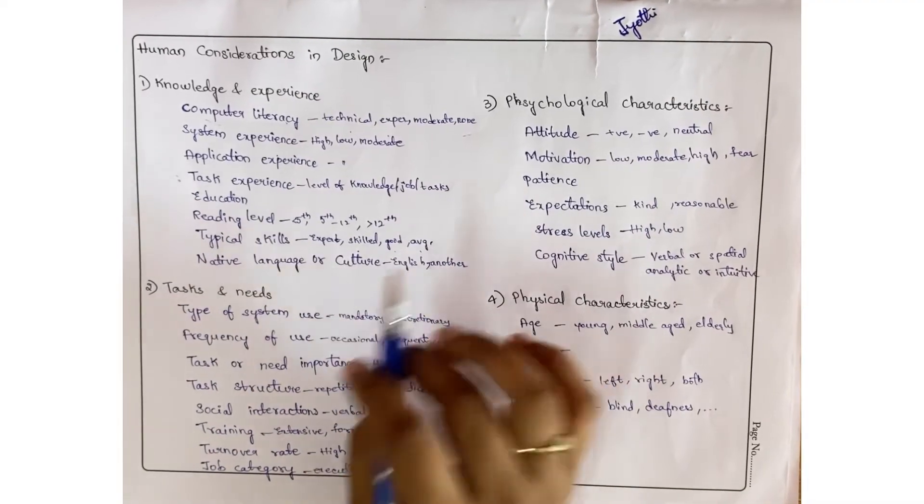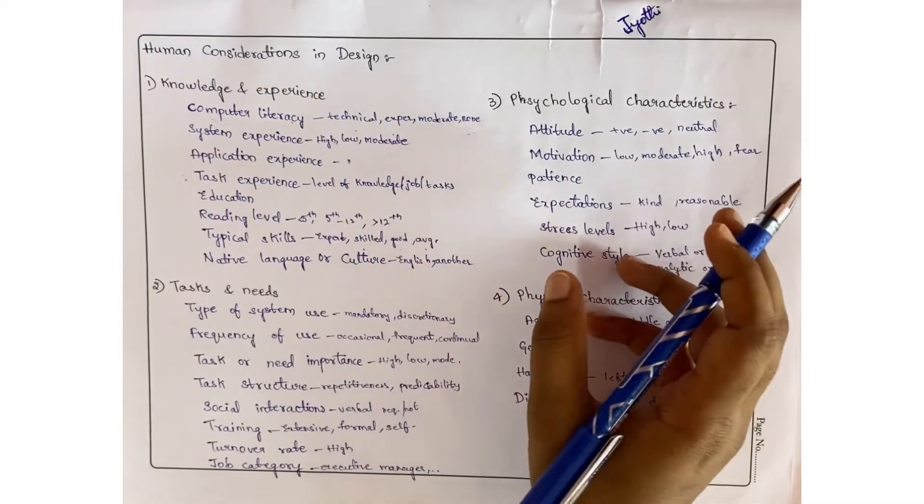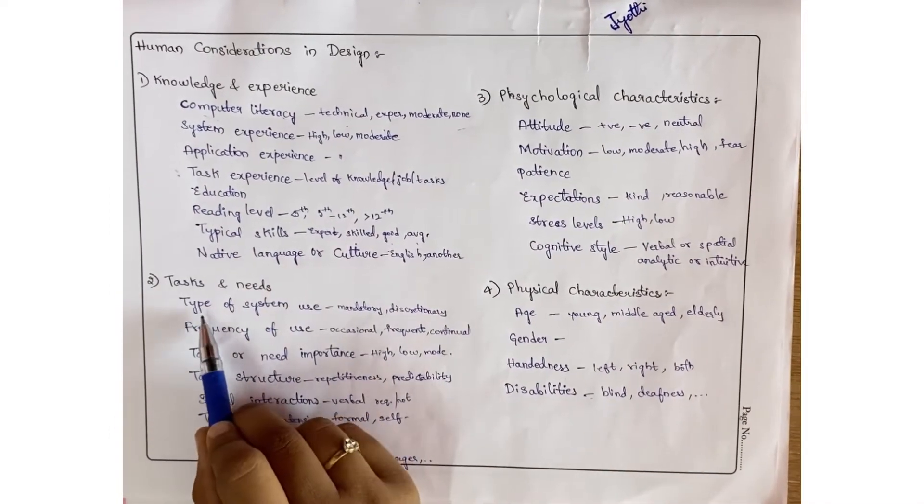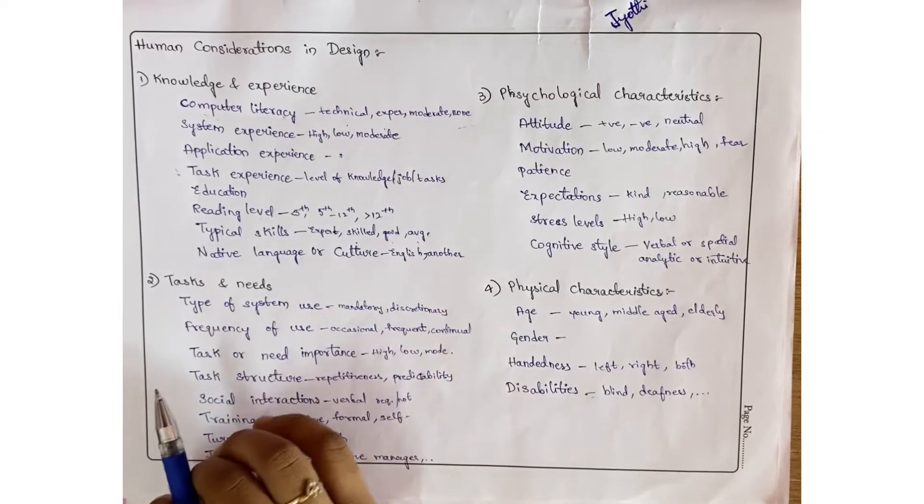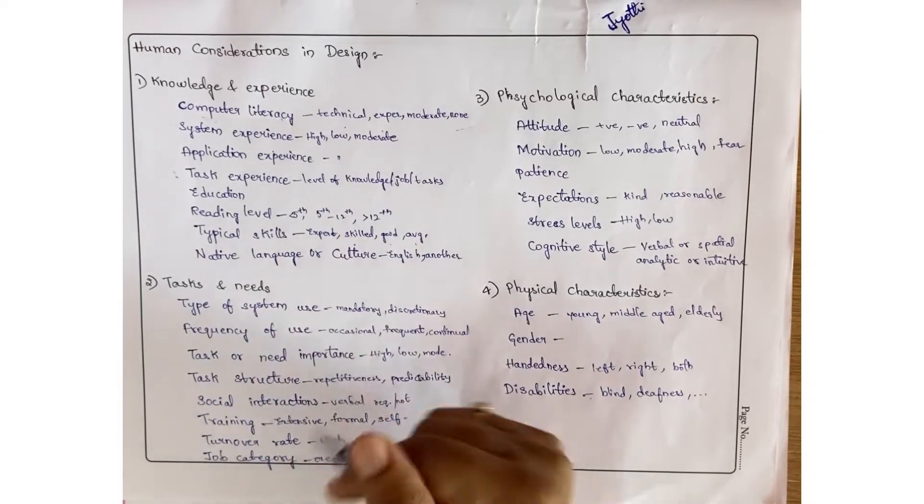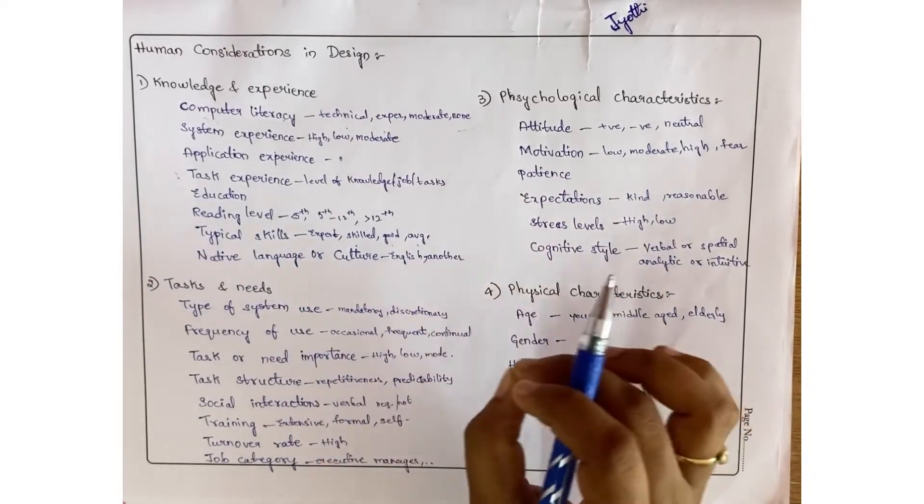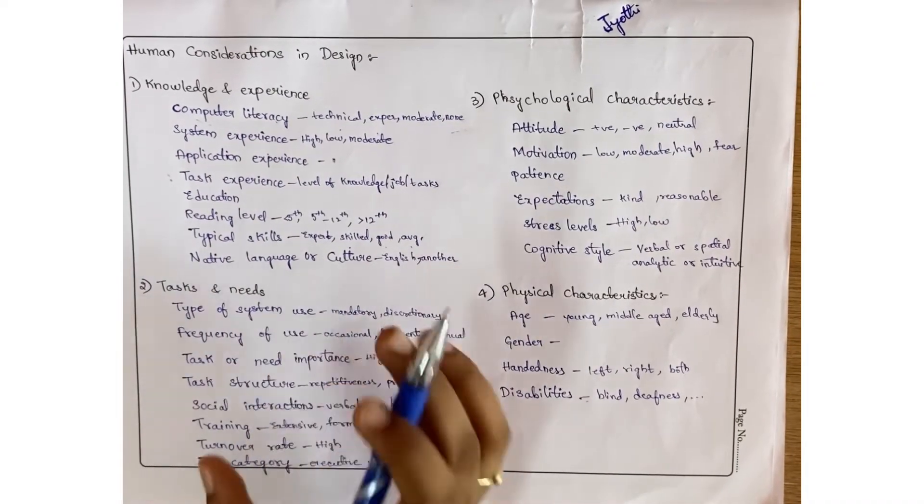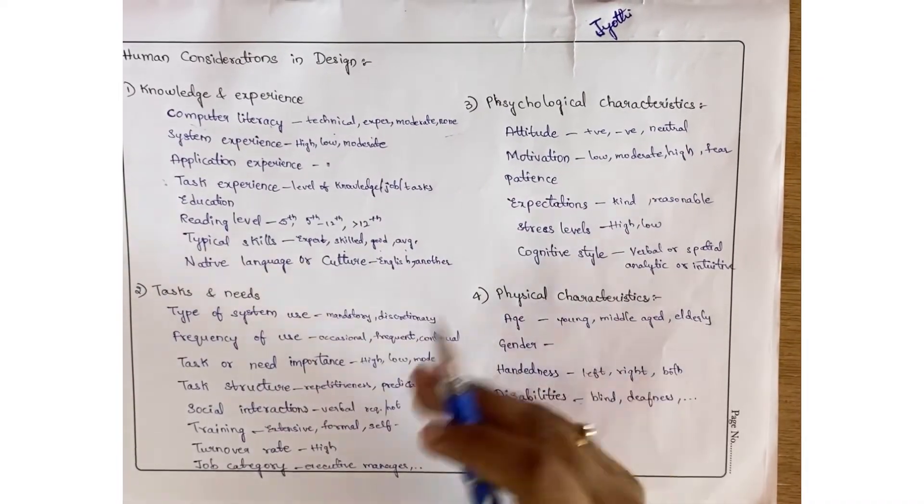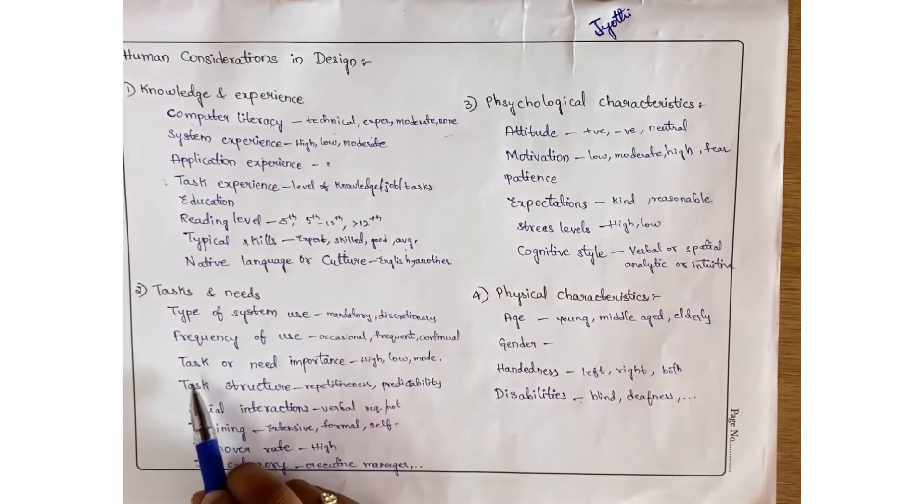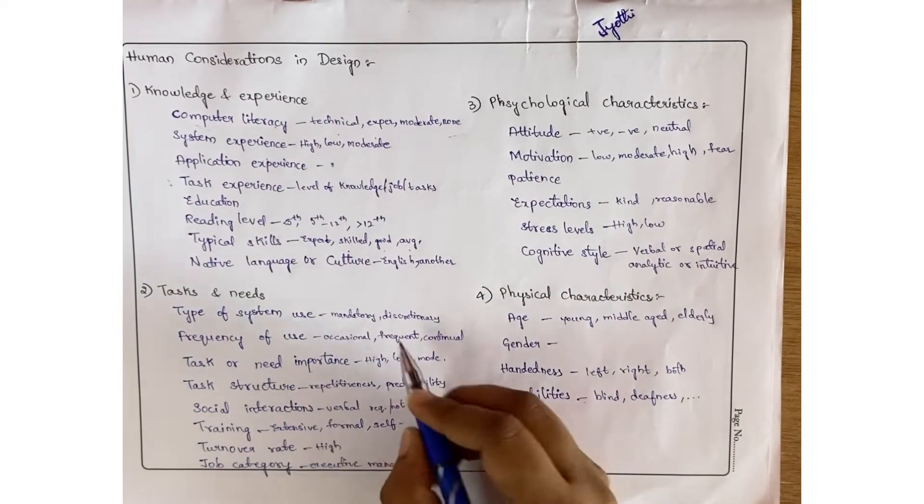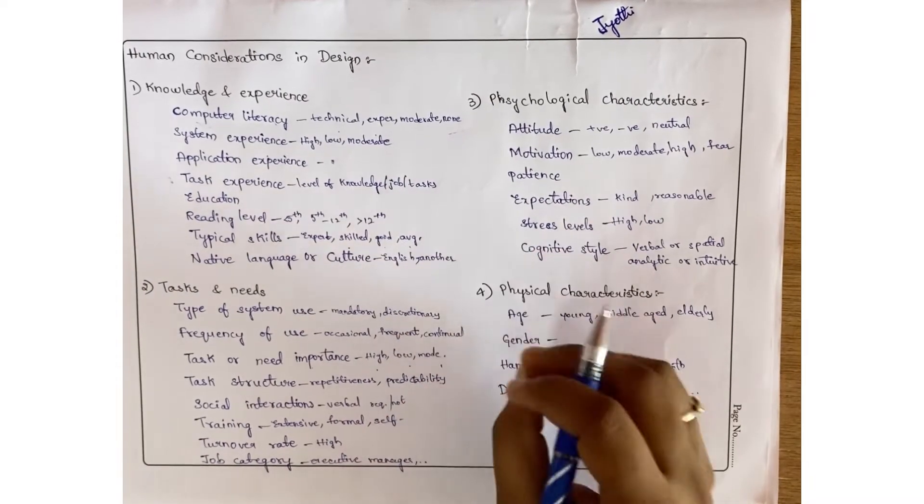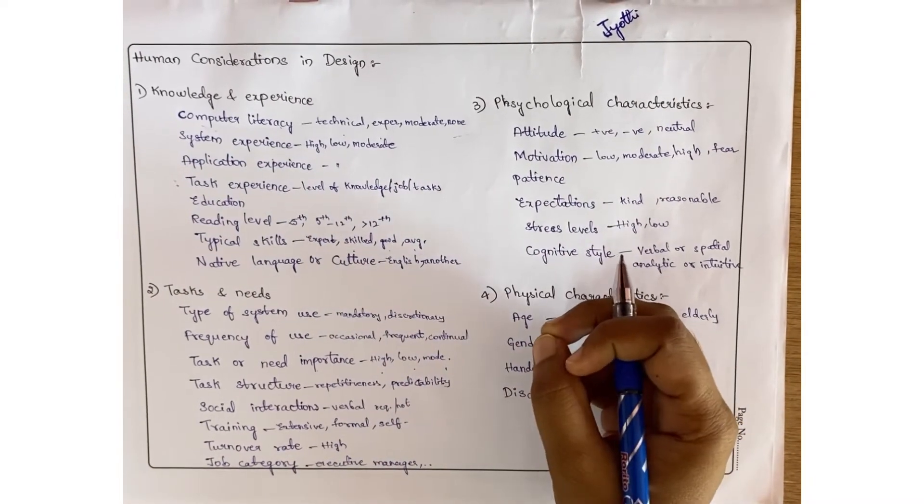Coming to tasks and needs - type of system use, like he should use the system mandatory or discretionary. Frequency of use - he is using the system occasionally, frequently, or continually. Task or need experience may be high, low, or moderate. Task structure - is it repetitive, structured, or predictable.